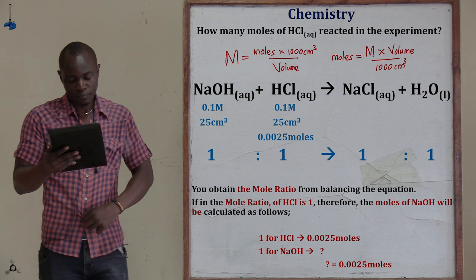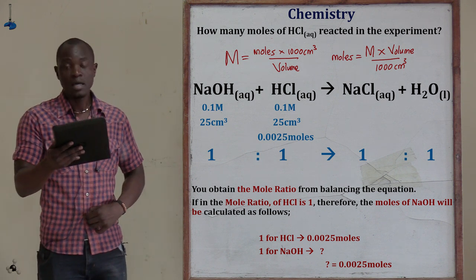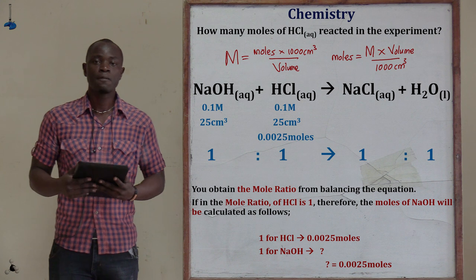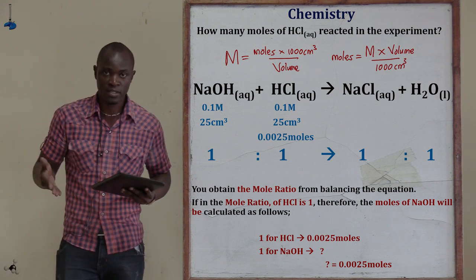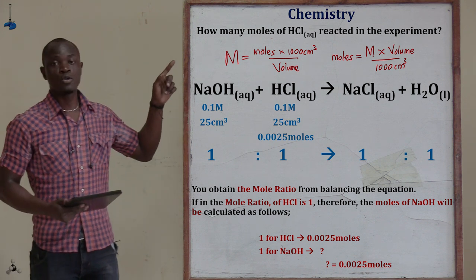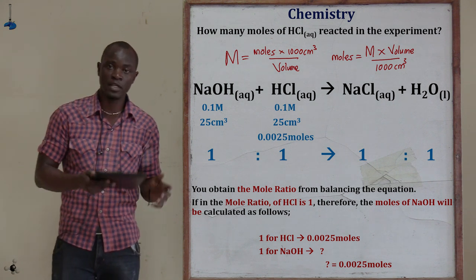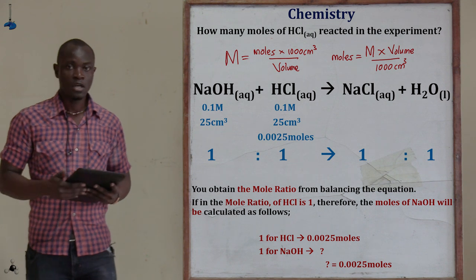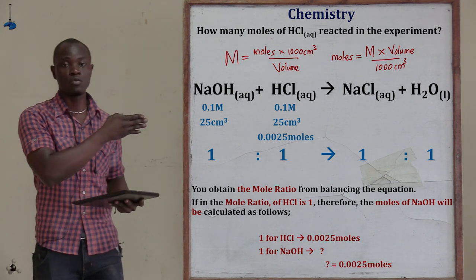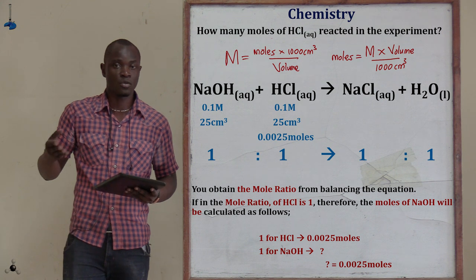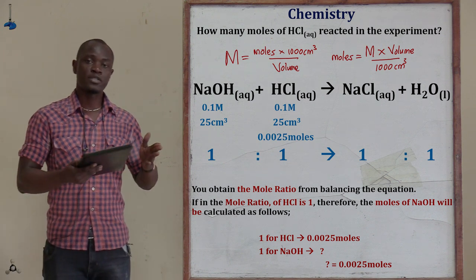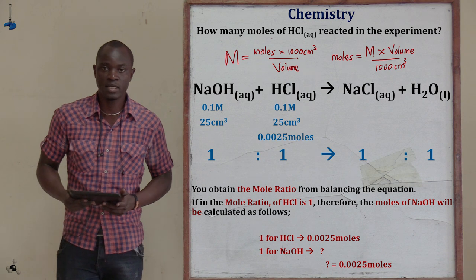The next question asks: how many moles of sodium hydroxide are in 25 cm³ of 0.1 molar sodium hydroxide? The moles of NaOH are 0.0025 moles, calculated using 0.1 molarity × 25 cm³ ÷ 1000. Alternatively, since we know the moles of HCl, we can write the equation and use the mole ratio to find the moles of NaOH.